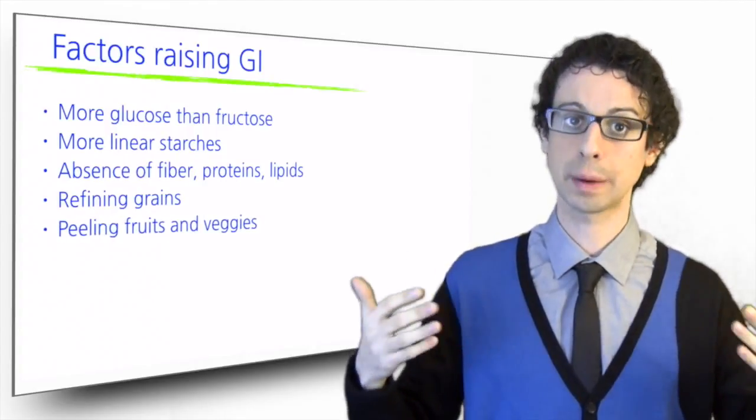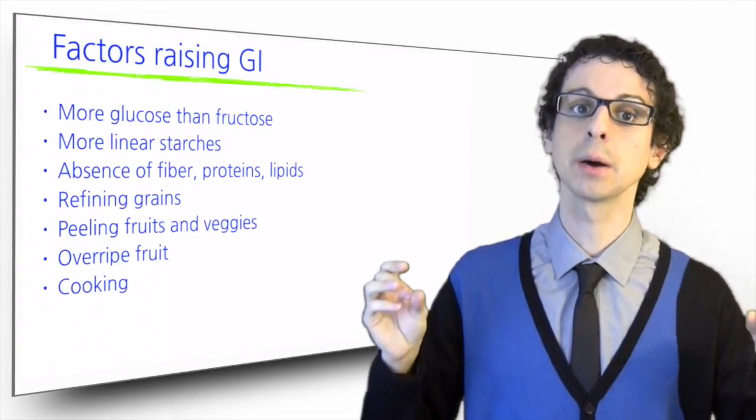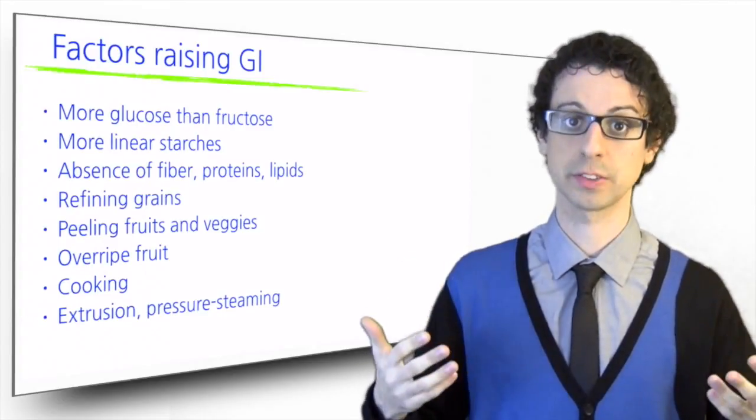Conversely, overcooked pasta, to the point it becomes soft, that you somehow appear to like, has a GI about 10 points higher, because its starch turns to glucose much faster.